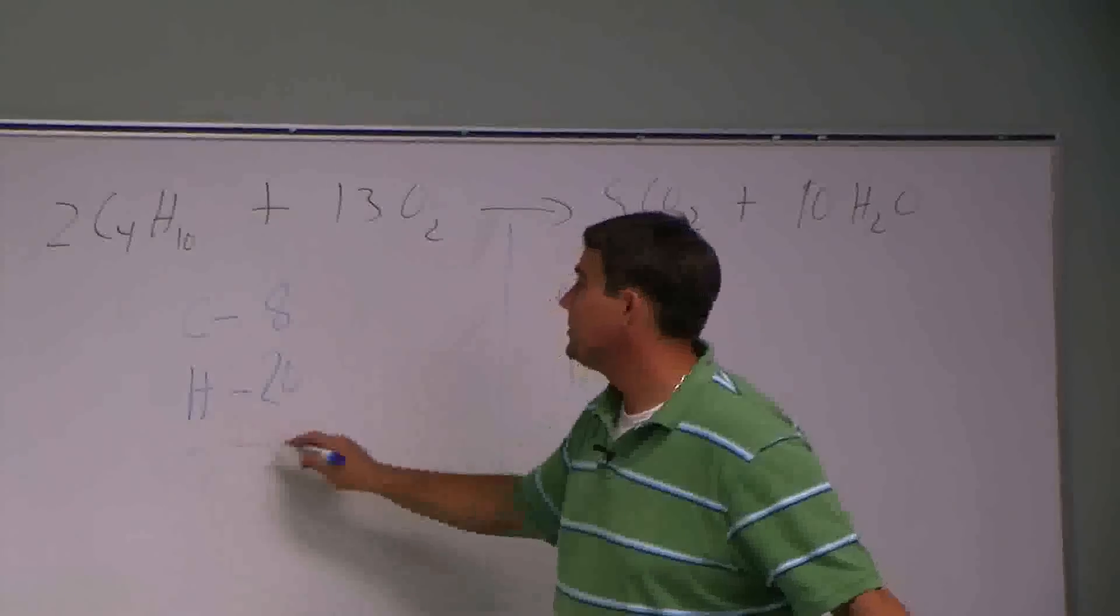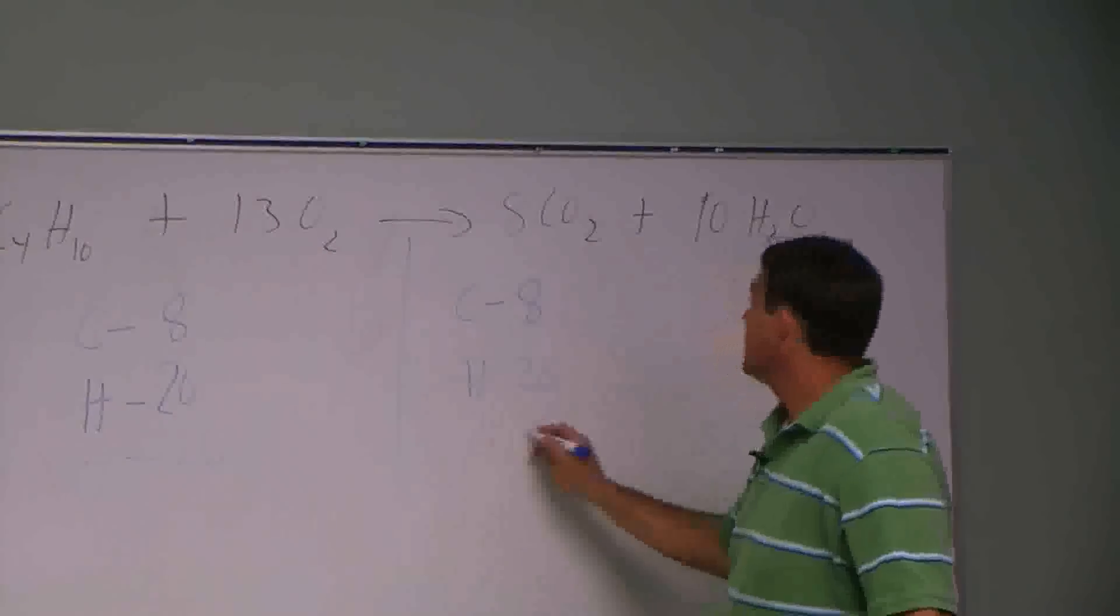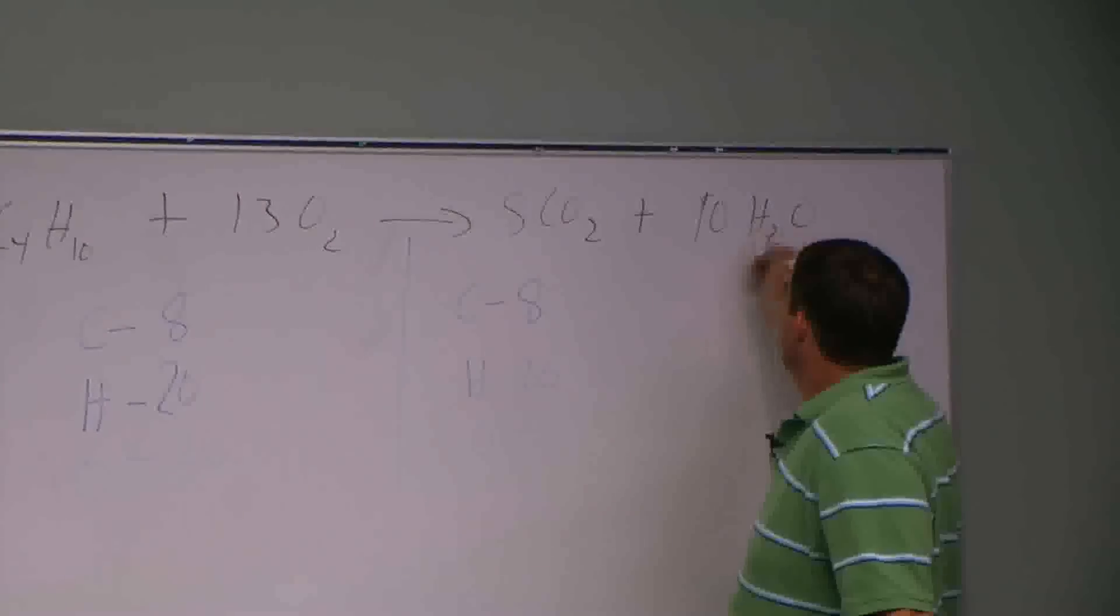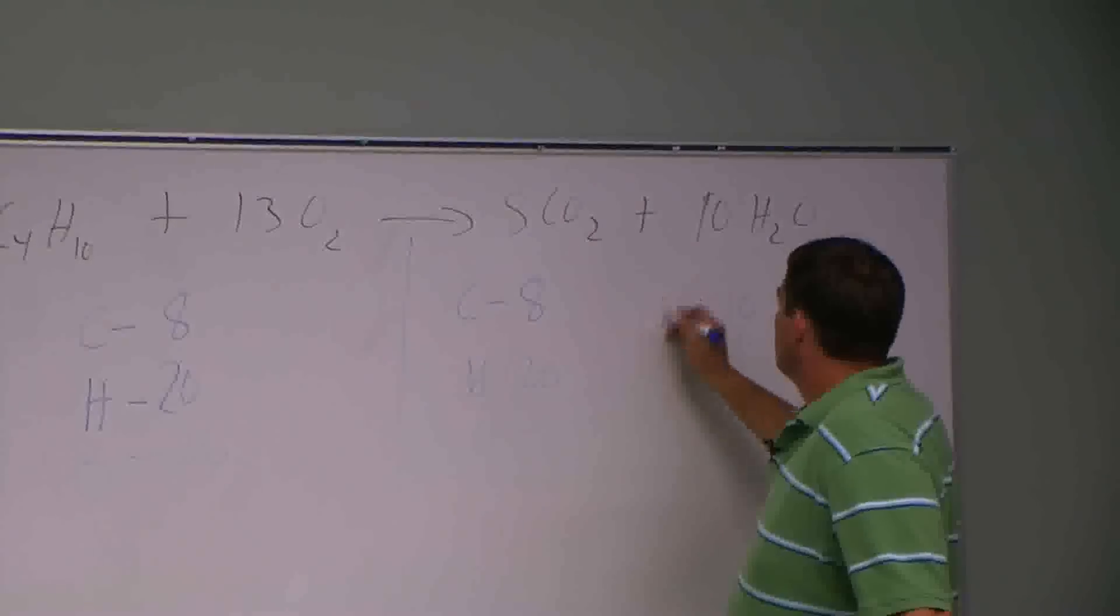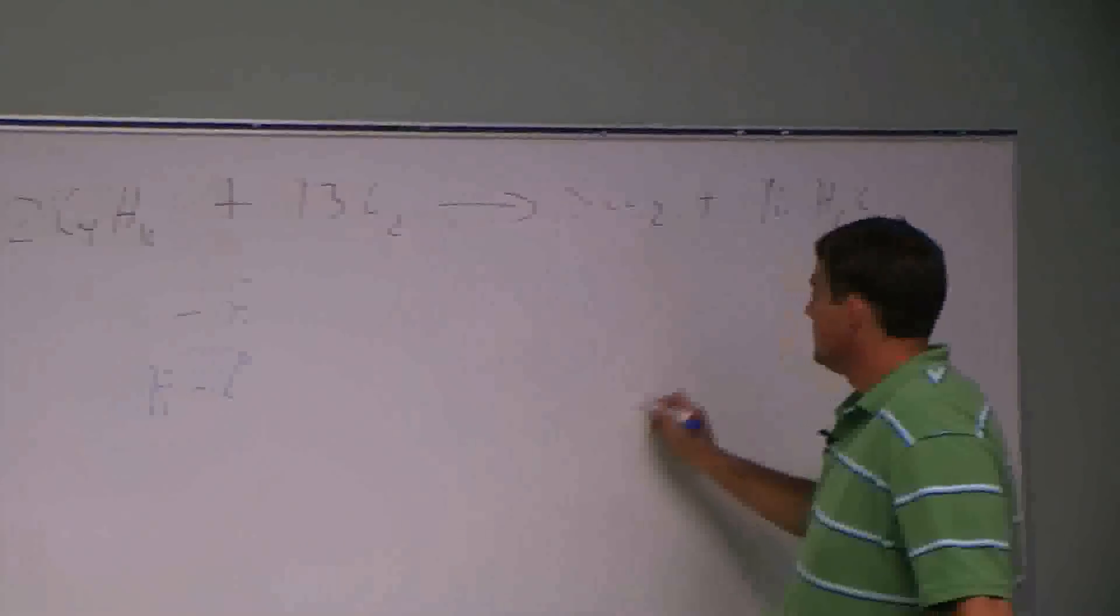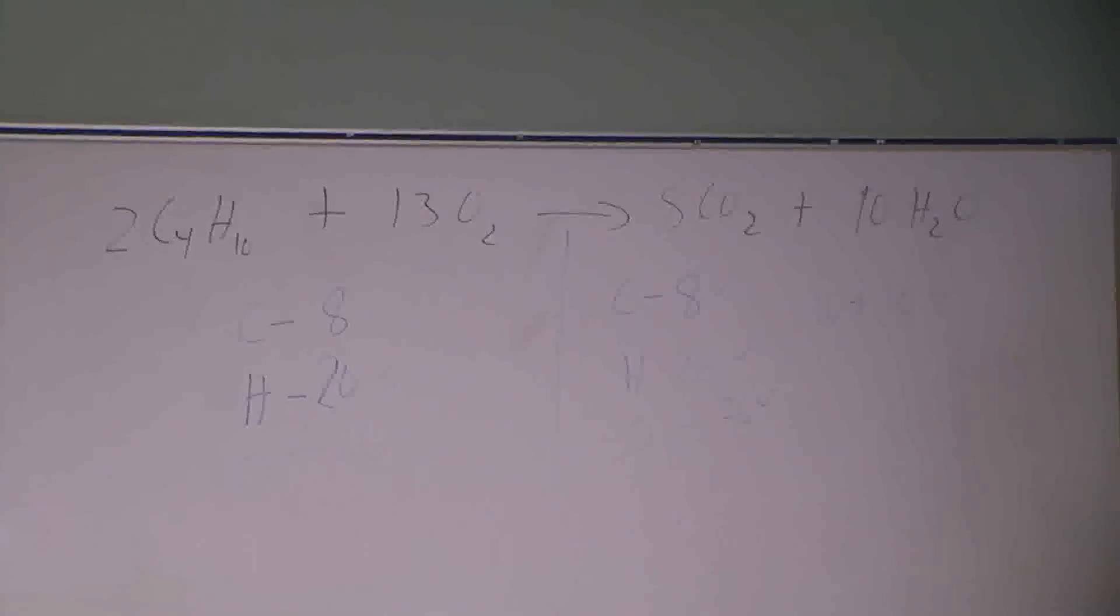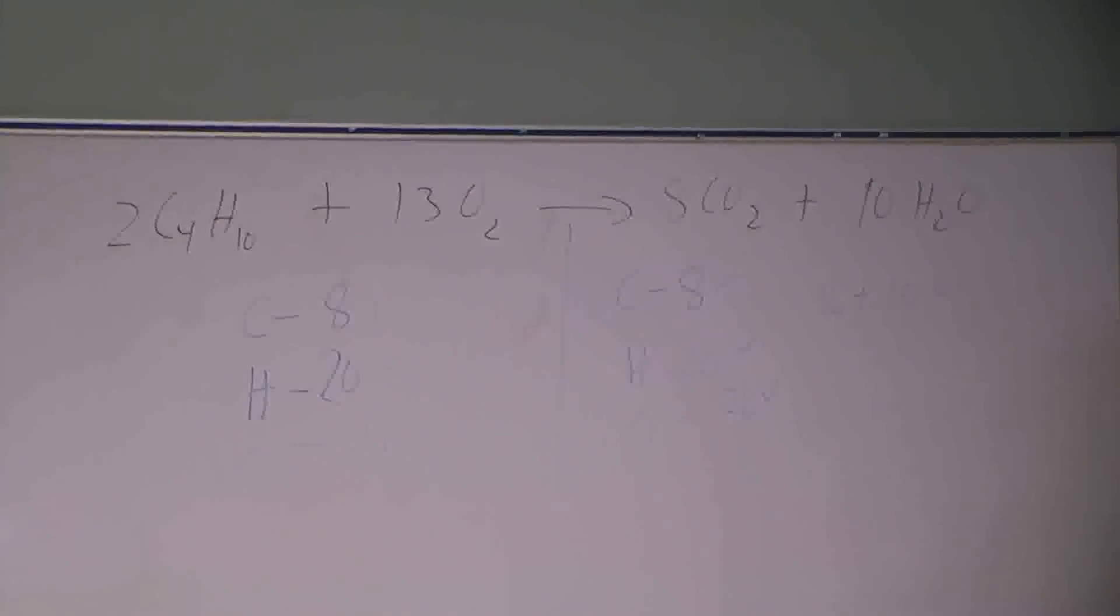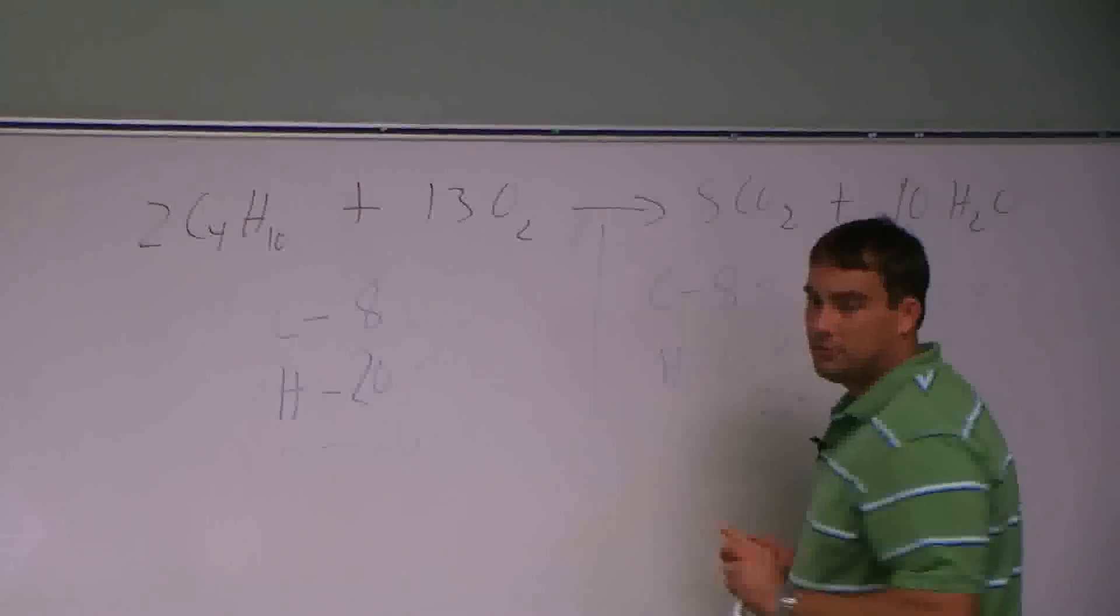And oxygens? How many we got? Thirteen times two, which is twenty-six. And how many oxygen we got over here? Well, there's ten coming there, and how many is coming out of here? Sixteen. So sixteen plus ten is? Do you see how we're mass balanced? It doesn't matter how you do it. Here's what matters. When you're done, you can get these check marks off of there.